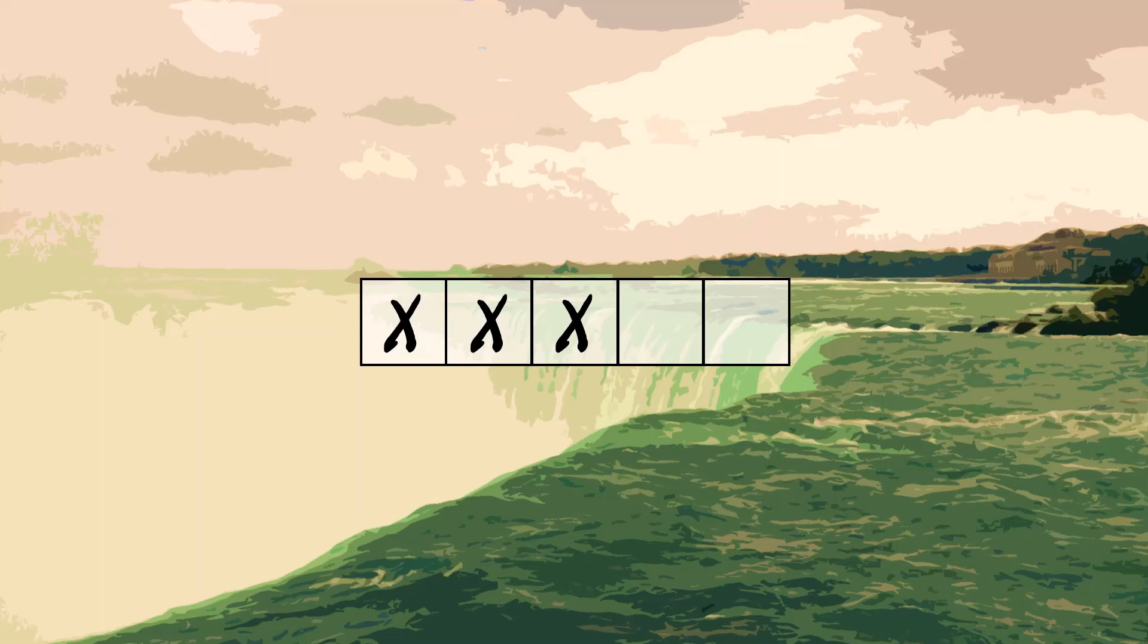In contrast, 6 squares presents a conundrum for player 1. No matter where they go, they're doomed to lose. For example, if they begin on the edge, player 2 can go here, and no matter where player 1 goes, player 2 will be able to complete 3 in a row on their next move.